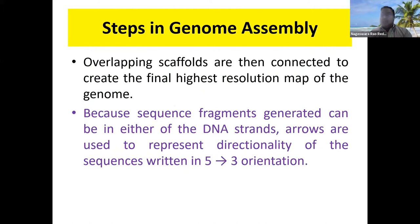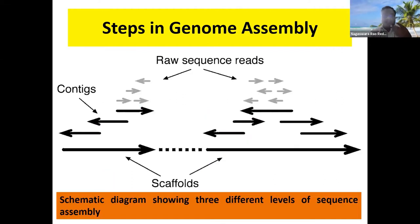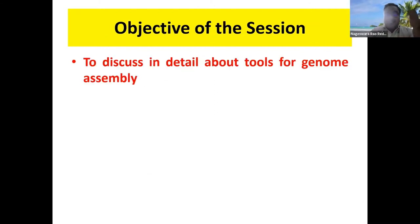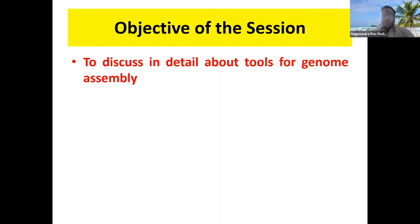We also see the orientation — whether 5' to 3' or 3' to 5' — of whatever we generated. These reads in different orientations are assembled into contigs, and these contigs are assembled into scaffolds. Now with this brief introduction, we are going to see what tools are available for genome assembly.